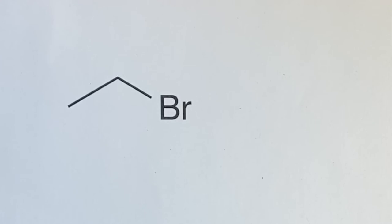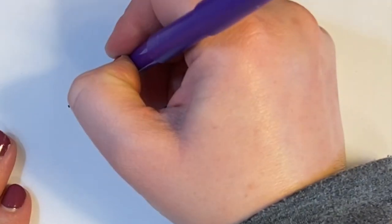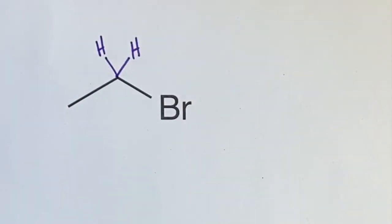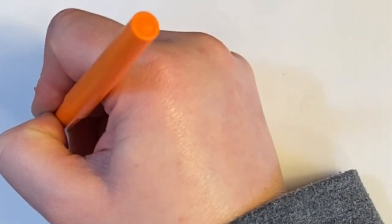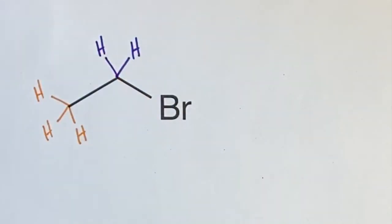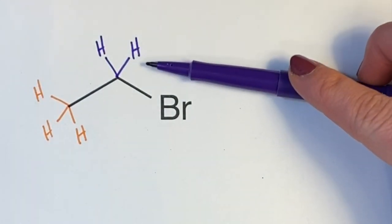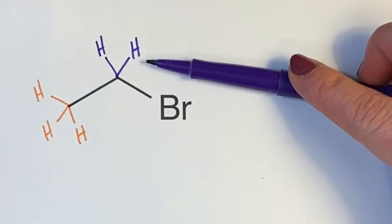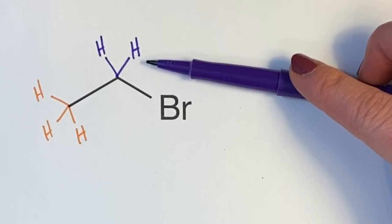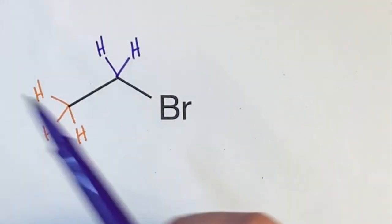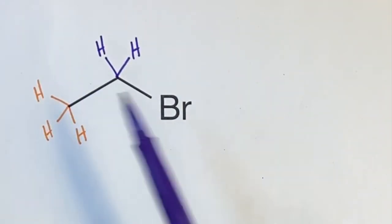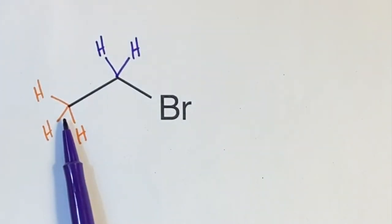Here's an example: 1-bromoethane. Drawing the protons in, we have 2 protons on one carbon and 3 protons on the other carbon. Protons bonded to the same carbon will generally show up in the same signal in the NMR spectrum. So these 2 protons on one carbon give 1 signal, and the 3 protons on the other carbon give a second signal.